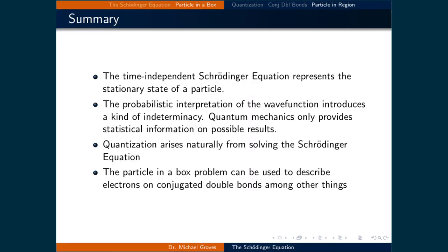To summarize, here are four key points from this lecture. First, the time-independent Schrödinger equation represents the stationary state of a particle. Stationary states means all observable properties are independent of time. That doesn't mean the wave isn't vibrating, it's that the properties of the waves aren't changing. A wave can vibrate and still maintain a constant wavelength.